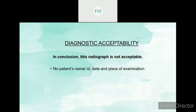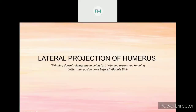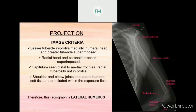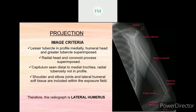Now we will go to the next projection, which is the lateral projection of humerus. This is also one of the basic projections used for humerus. For the image criteria: first, we want to see that the superior part of humerus — the lesser tuberosity — is in profile medially, and the humeral head and greater tuberosity are superimposed. Next, the radial head and the coronoid process are superimposed to each other. The capitulum is distal to the medial trochlea, and the radial tuberosity is not in profile. The shoulder and elbow joint and the lateral humerus soft tissue are included within the exposure field. Therefore, this radiograph is lateral humerus.